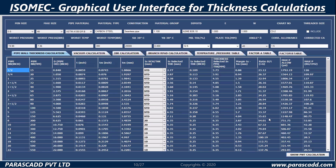Let's look at the Isomec graphical user interface for thickness calculations. We have the pipe wall thickness calculation, the vacuum calculation, the IBR calculation, the branch repad calculation, and the temperature pressure table.